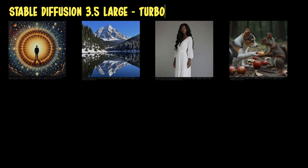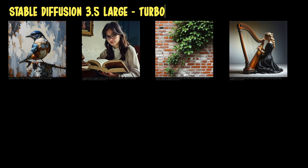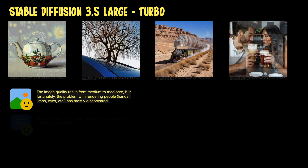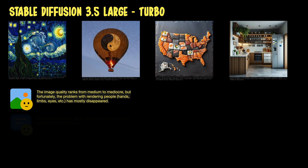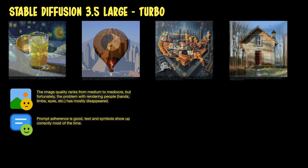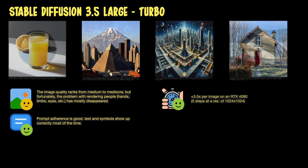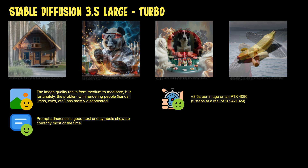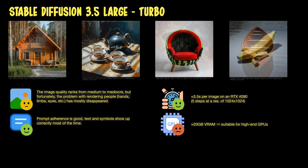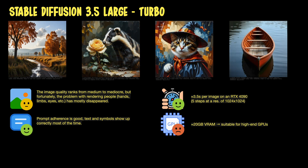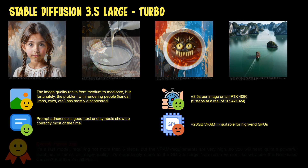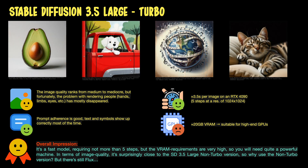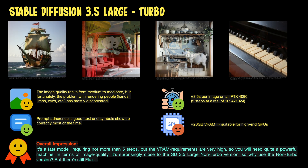There is also a turbo version of the Stable Diffusion 3.5 large model. The image quality varies from medium to mediocre, so nothing outstanding. Fortunately, it can render hands and fingers correctly most of the time. Prompt adherence is good, and text and symbols usually show up correctly. It's rendering pretty fast because only a few steps are required — 3.5 seconds on an RTX 4090 is a good value for this large model. The VRAM usage is still very high at about 20GB, though slightly better than the standard large model. So what's my conclusion? It's a fast model on a high-end machine, and the image quality is surprisingly close to the non-turbo version. Maybe it can be an alternative to Flux for some use cases.